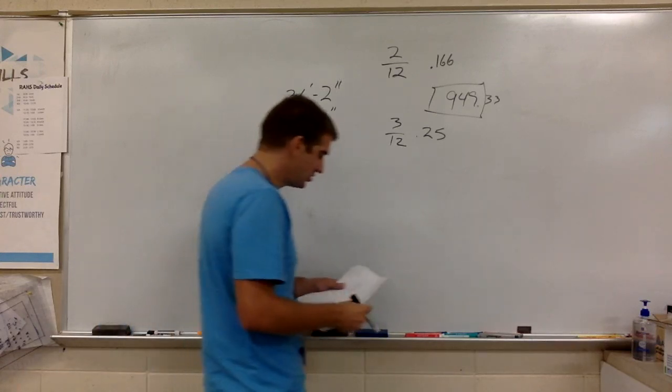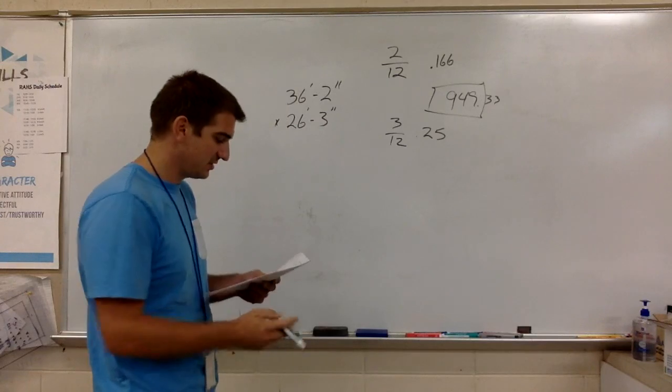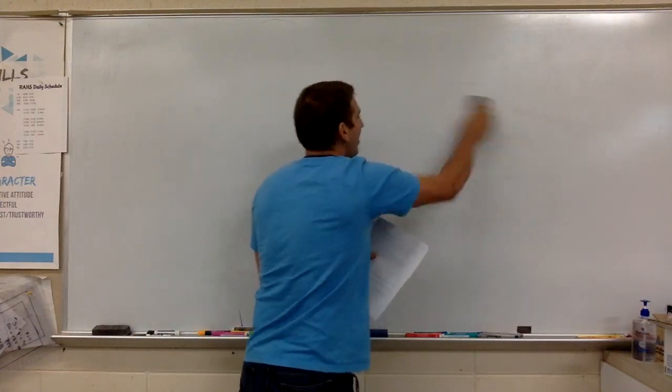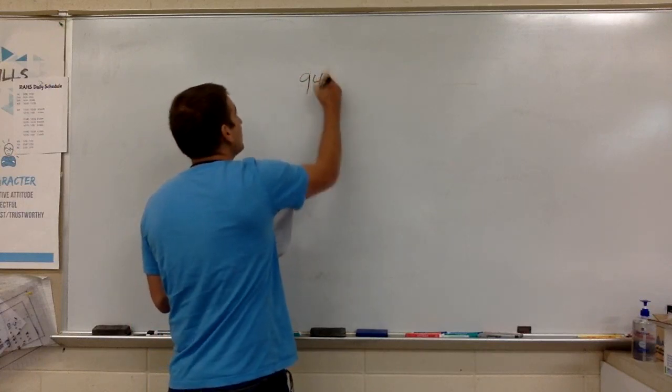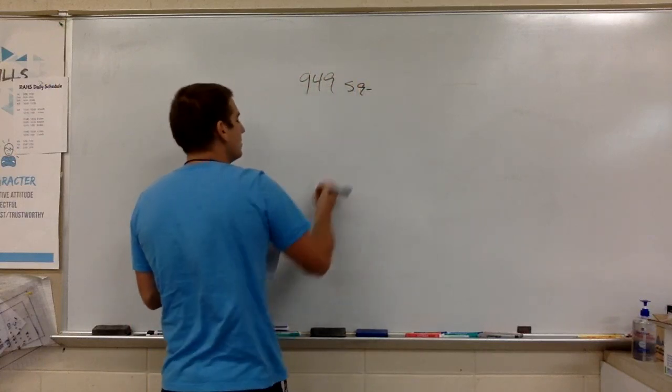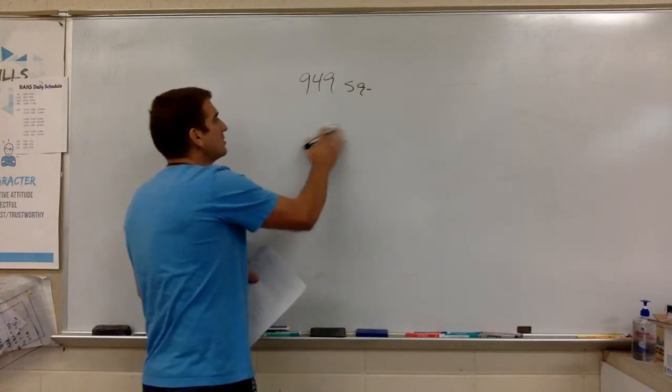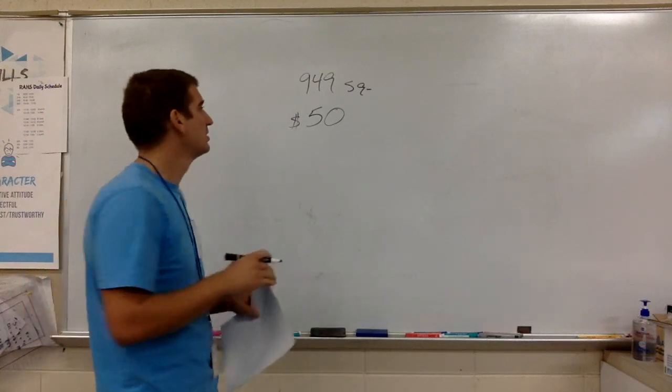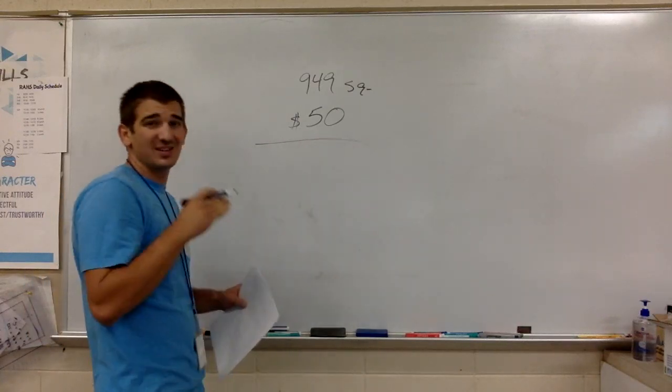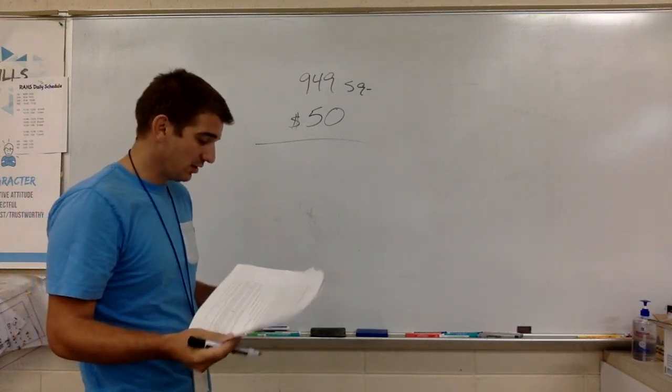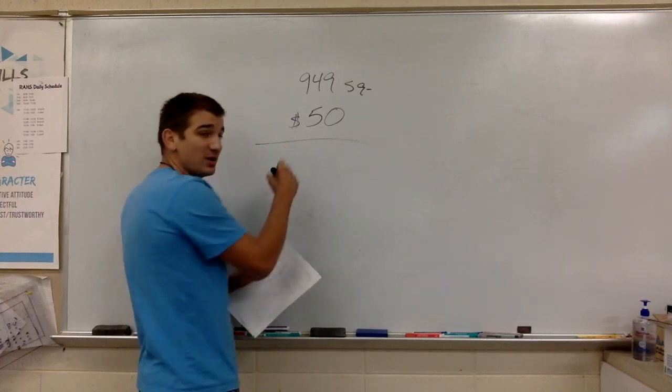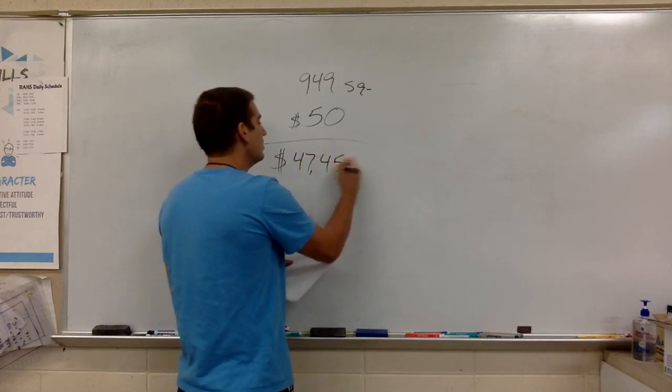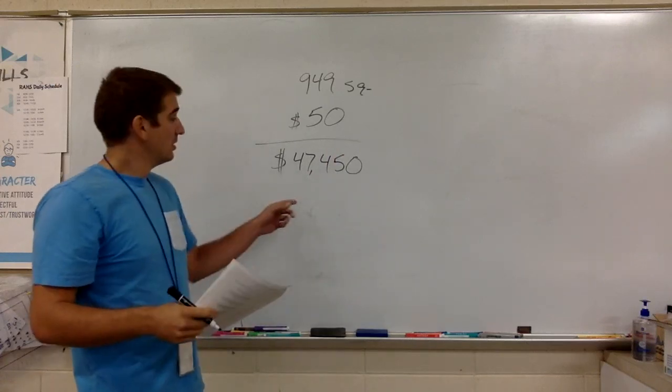Question two says if it costs $50 per square foot to build the house, what would the cost be? So we got our 949 square feet in the whole house. For every 12 inch by 12 inch piece in the house costs us $50 to build. That's assuming all of your labor, all your materials. We multiply those together. It's going to tell us how much that house is going to cost to build. And you want to punch that into your calculator. See if your number matches mine, we have $47,450.